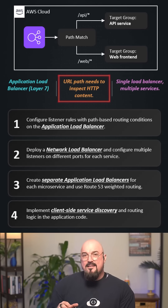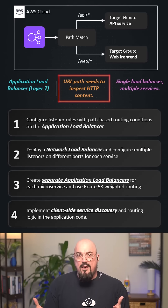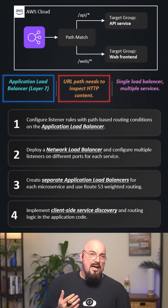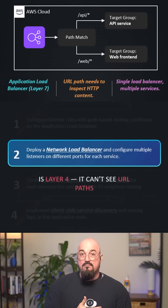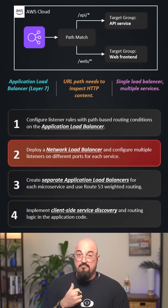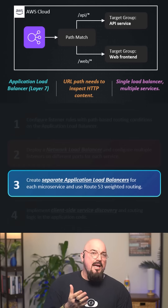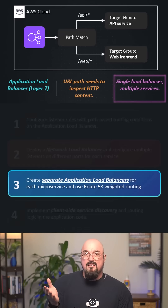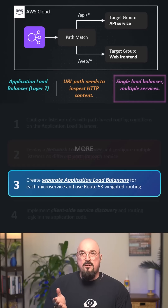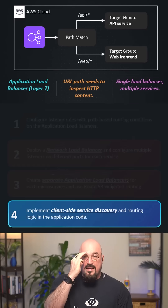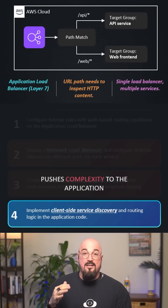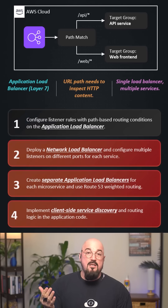URL path routing means inspecting HTTP content, which means layer seven. A network load balancer is layer four — it can't see URL patterns, so it's out. Separate ALBs could work, but our hint says a single load balancer, and that would also be more expensive. Client-side routing pushes complexity to the application, which AWS typically doesn't favor as an answer.